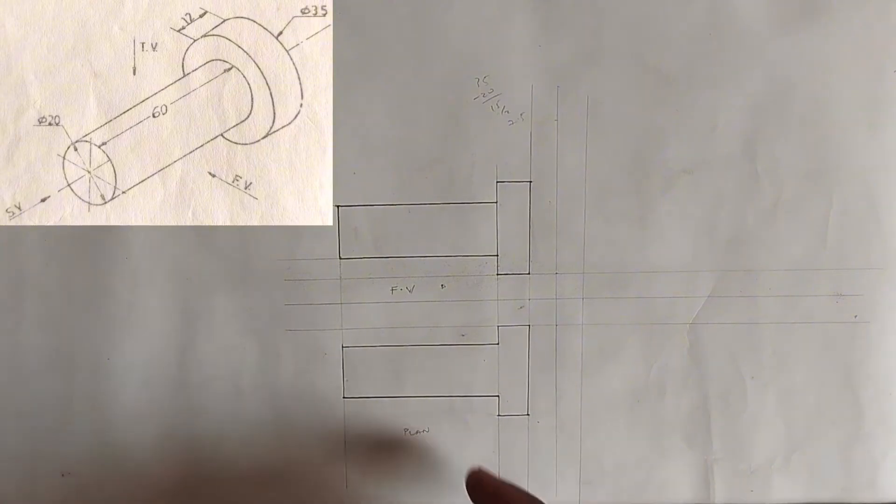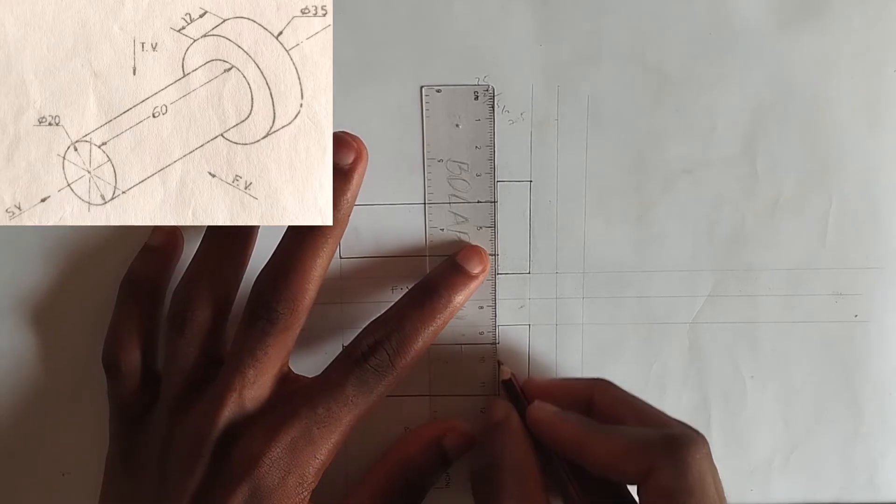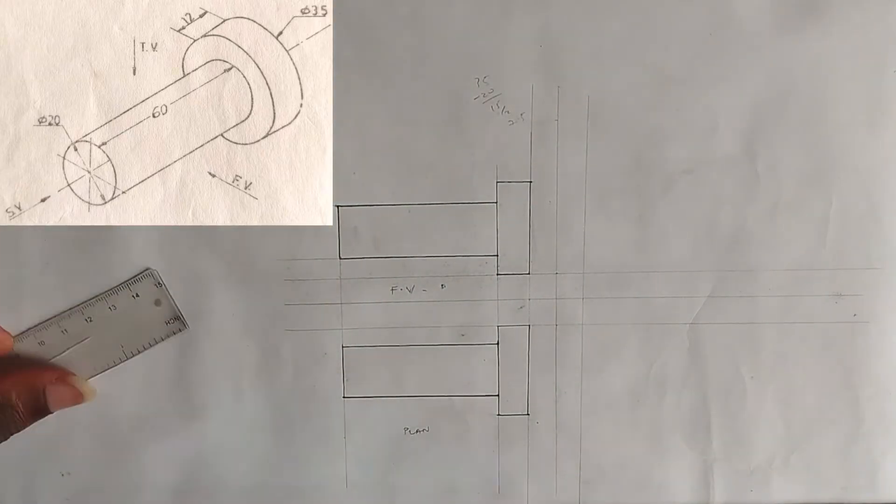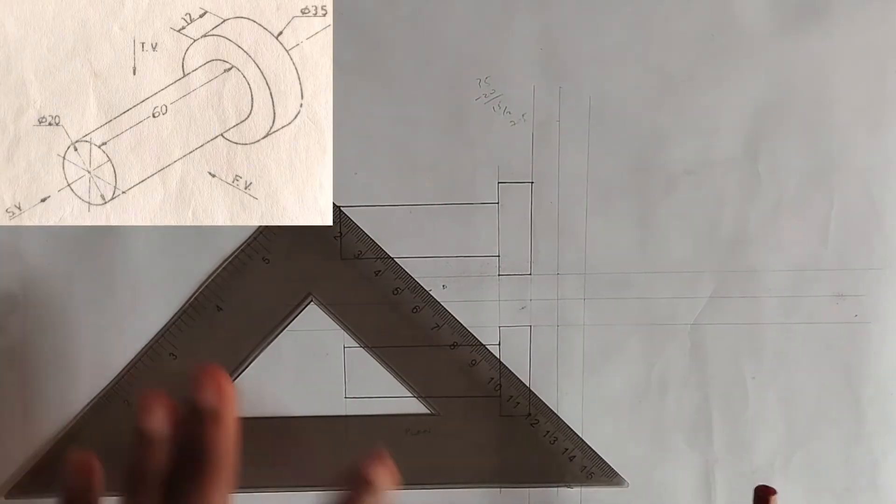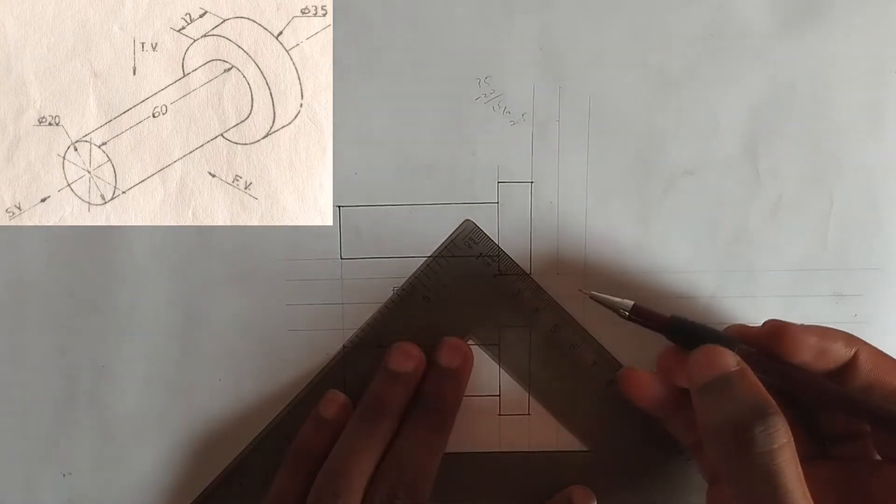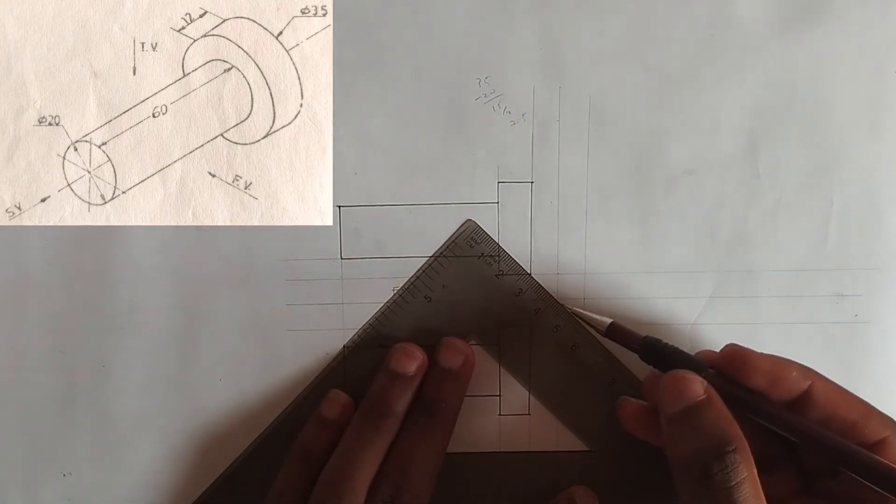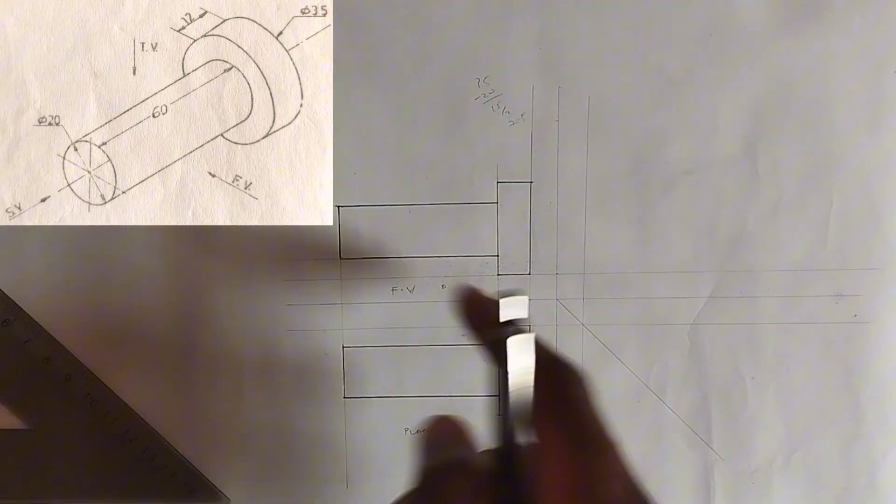We have drawn our plan already. We'll join this also. We'll join this also. This is our plan. In order to draw the side view, we are going to construct an angle 45 degree from the center of these two points. The vertical and horizontal line we drew at first. We'll draw our 45 degree.